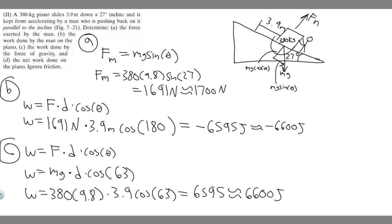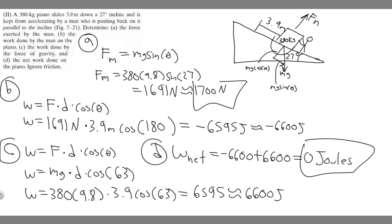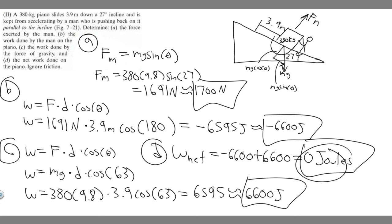For part (d), the net work done on the piano is found by adding all the work contributions. We have the work by gravity (+6,600 J) and the work by the man (−6,600 J). Adding them: +6,600 + (−6,600) = 0 joules. To summarize: (a) ≈1,700 N, (b) ≈−6,600 J, (c) ≈+6,600 J, and (d) = 0 J.